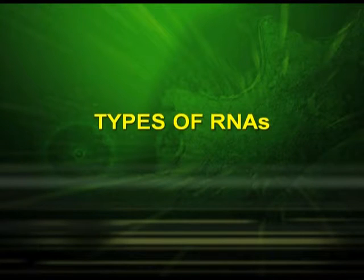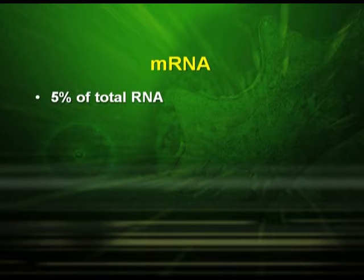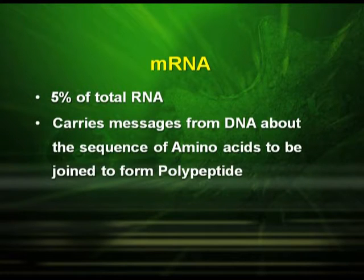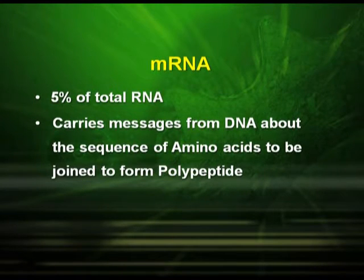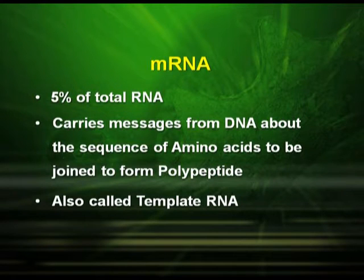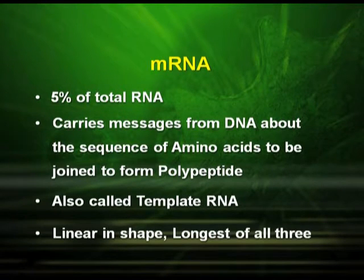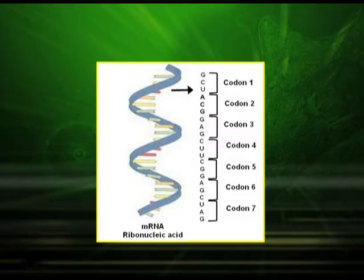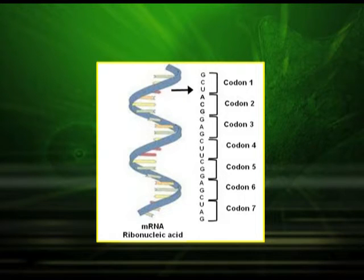The first type is mRNA, that is called messenger RNA. This is 5% of the total RNA. It carries messages from DNA about the sequence of amino acids to be joined to form a polypeptide. It is also called template RNA. It is linear in shape and it is the longest of all three. The mRNA is single-stranded with codons 1, 2, 3, 4, 5 — representing triplet codons.